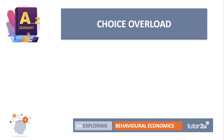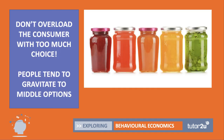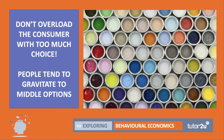Sometimes in economics, although choice is good, we can have too much of it. Choice overload happens when there are too many options to make a fully informed, rational decision. Don't overload the consumer — people often revert to middle options when given choices. Sometimes there's just far too much choice; although you might want a million shades of paint, it is time-consuming and inconvenient to find precisely the right one.